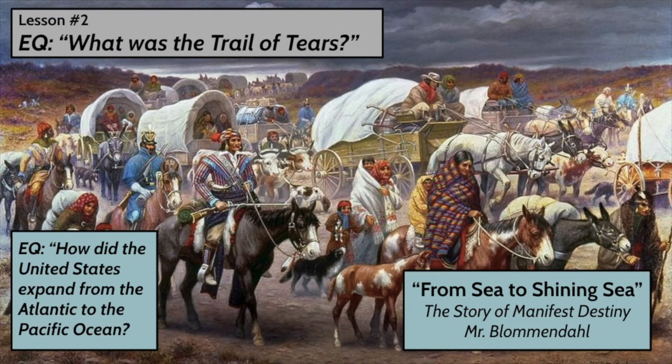Hello, ladies and gentlemen, and welcome to lesson number two in our Manifest Destiny unit, where we are answering the overall essential question: how did the United States expand from the Atlantic to the Pacific Ocean? Today, in lesson two, we're going to answer the essential question: what was the Trail of Tears?